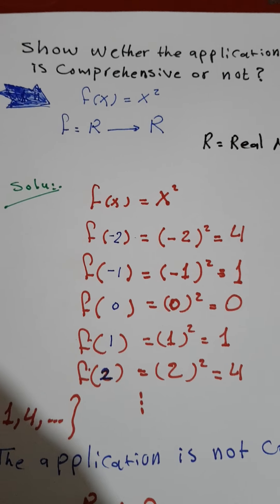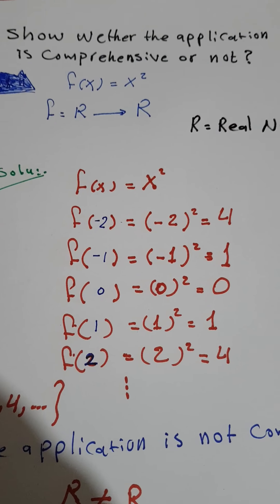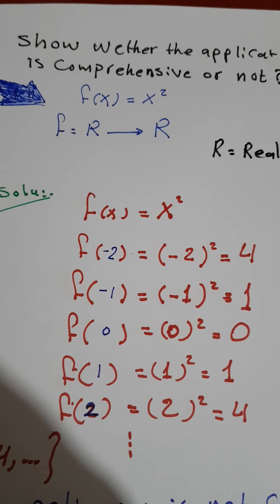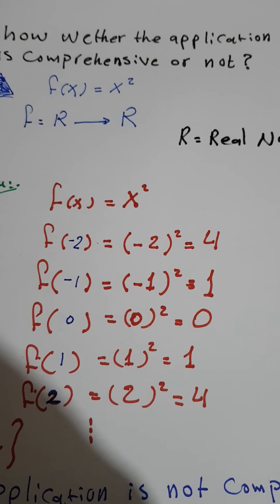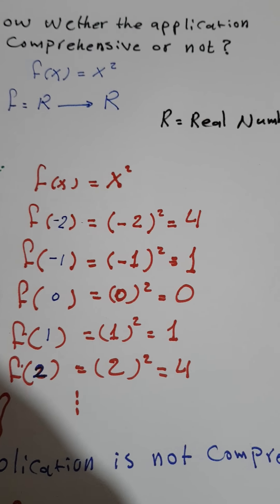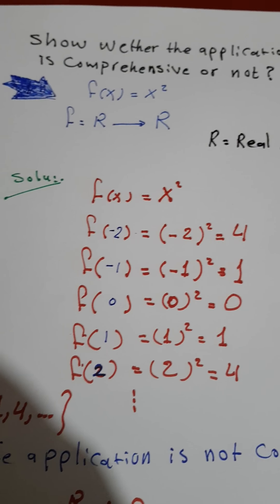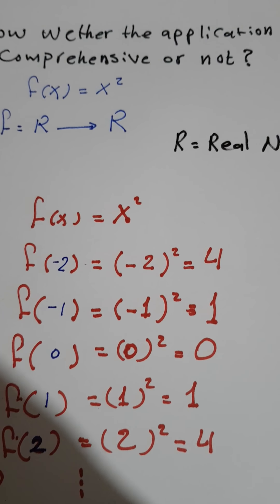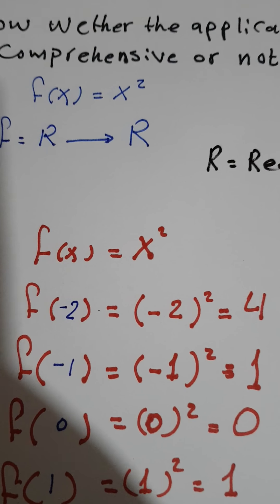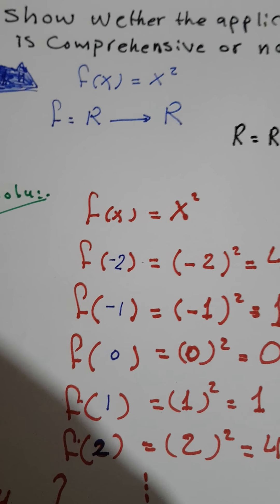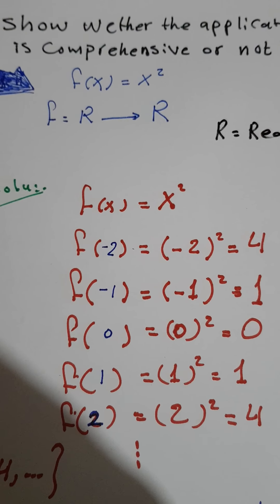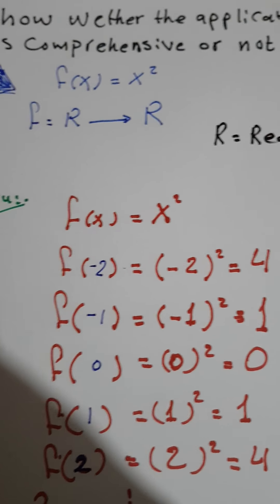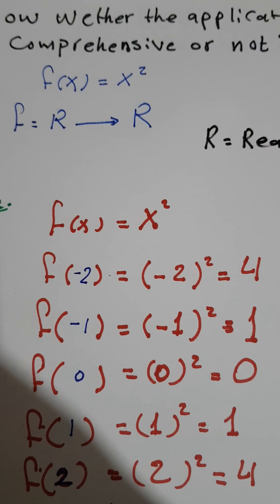Welcome back. In this example, we will show whether the application is surjective or not. We have f from ℝ to ℝ, where f(x) = x².